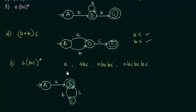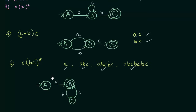Let us check if these strings are accepted. A by itself: comes to final state B — accepted. ABC: A, B, C — comes to final state B — accepted. ABCBC: A, B, C, B, C — comes to final state B — accepted. ABCBCBC: comes to final state B — accepted. Any number of BC repetitions will be accepted. We have successfully designed the finite automata for this regular expression.